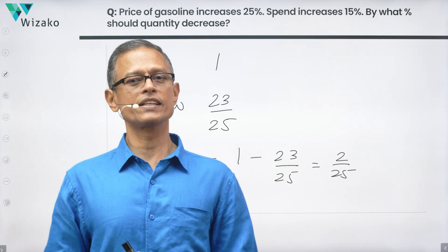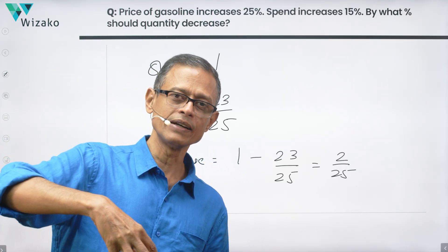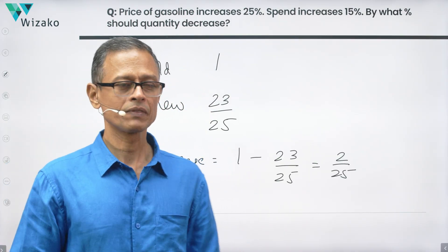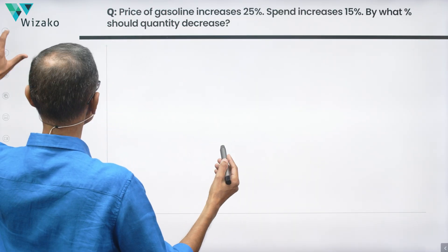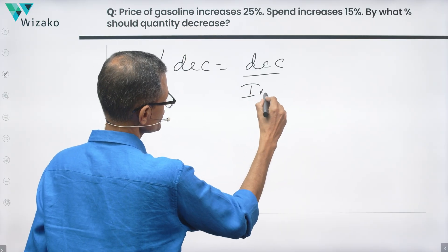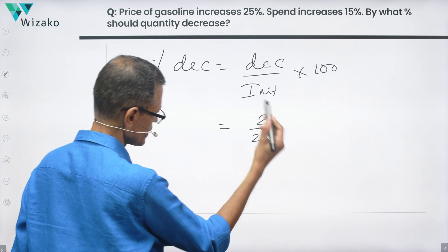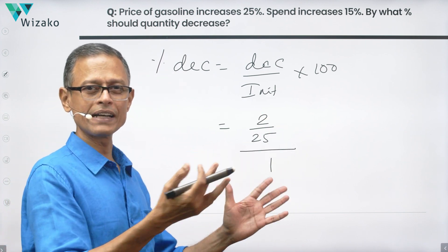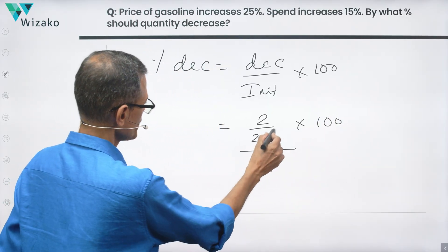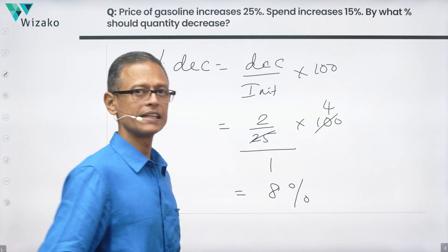So this is the extent to which he has reduced his quantity. If he could get one gallon earlier, now he's able to get only 23/25 gallons, meaning the quantity has come down by 2/25 gallons. Now we need to find the percentage decrease. Percentage decrease equals decrease divided by initial value times 100. The decrease is 2/25 units and the initial quantity is 1 unit. So (2/25) divided by 1, times 100. The 25 cancels with 100 to leave 4, and 2 times 4 gives us 8 — so the percentage decrease in quantity is 8%.